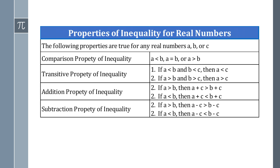Here are some properties of inequality for real numbers — true for any real numbers A, B, or C. The comparison property: A is less than B, A is equal to B, or A is greater than B. The transitive property: if A is less than B and B is less than C, then A is less than C. Conversely, if A is greater than B and B is greater than C, then A is greater than C.